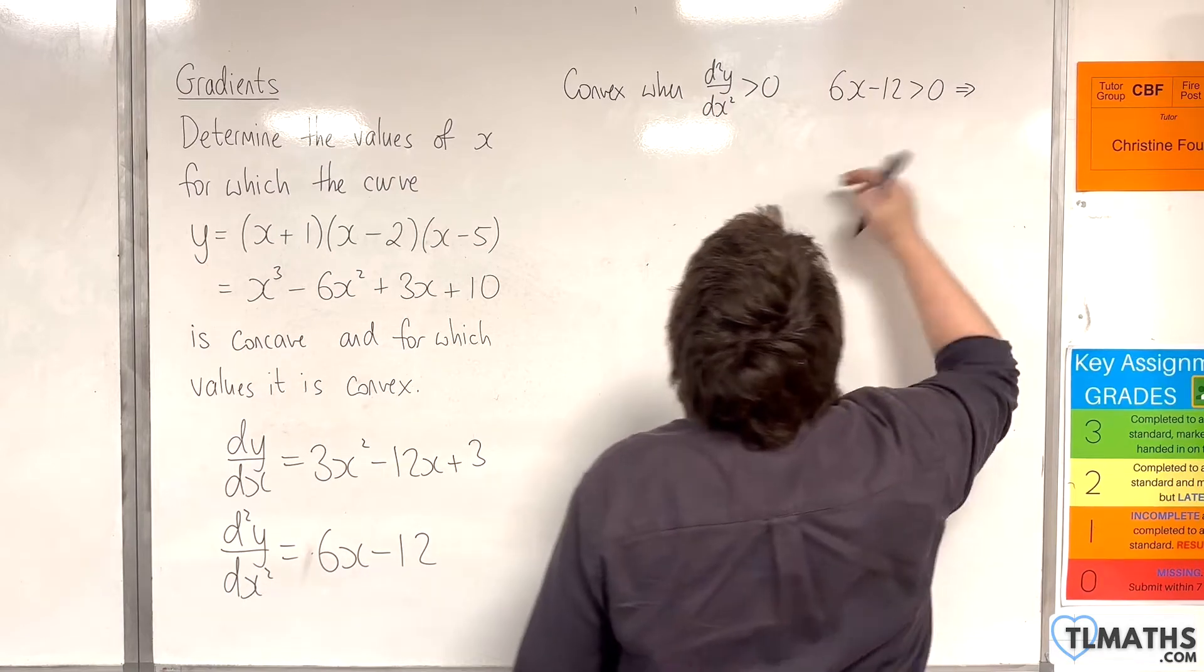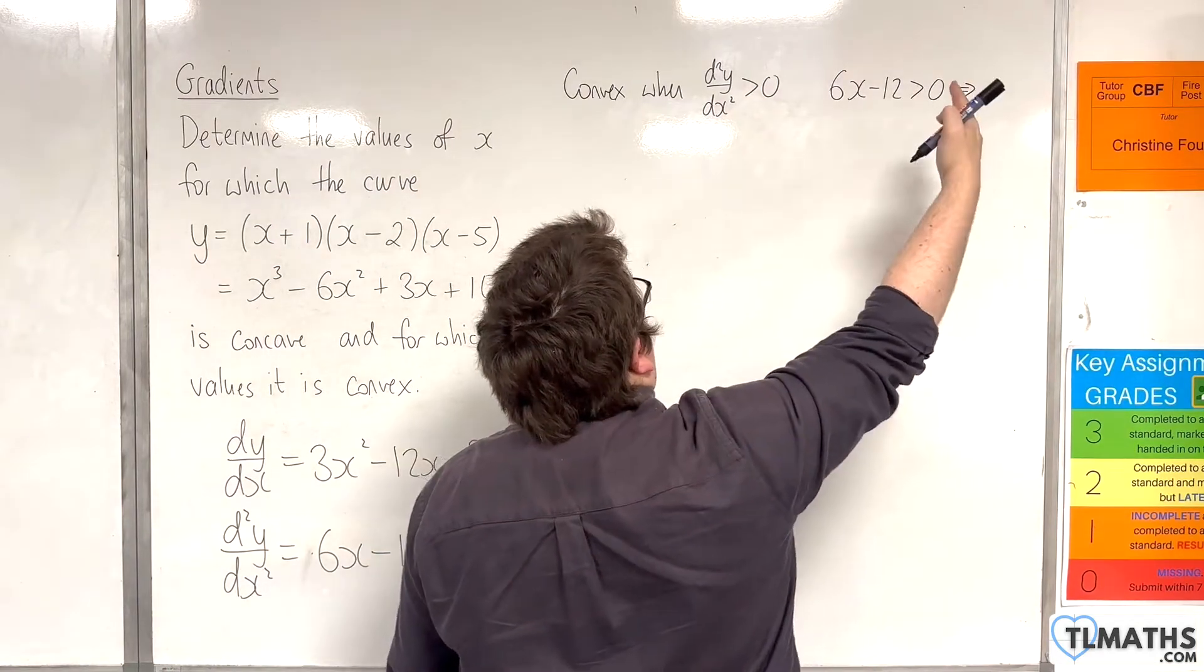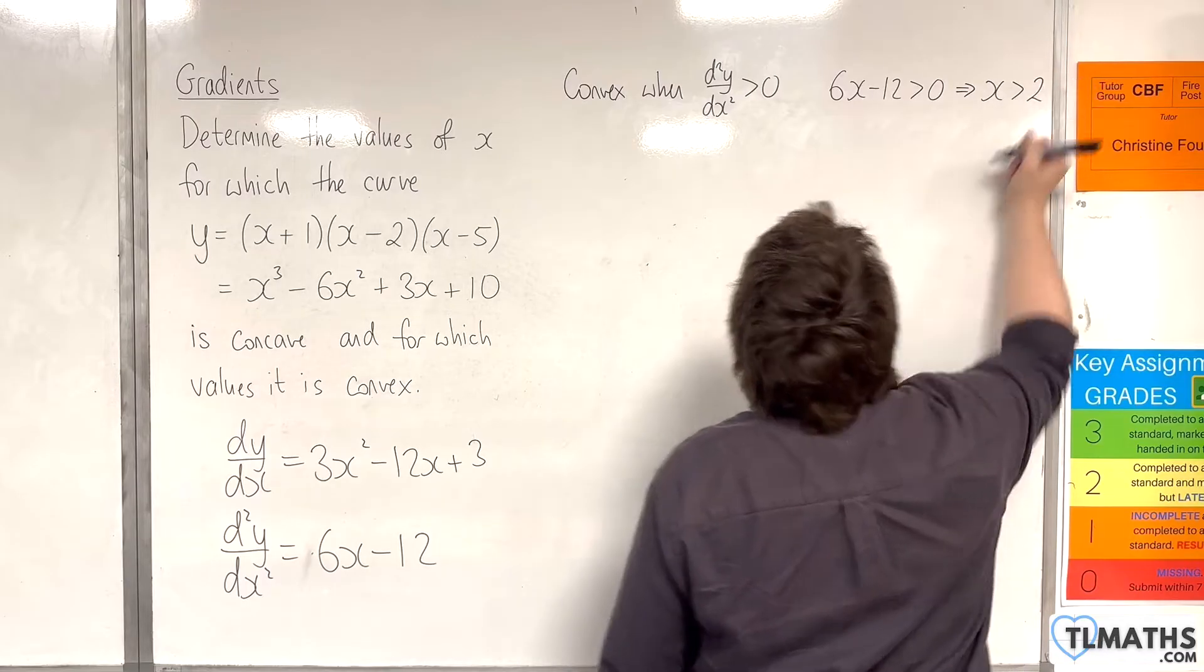then adding 12 to both sides, dividing through by 6, we'll get x is greater than 2.